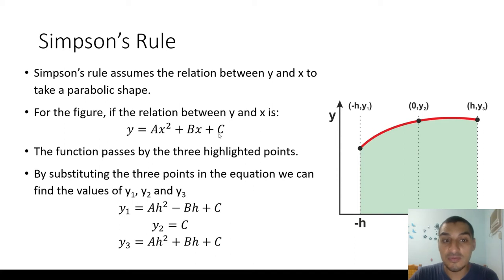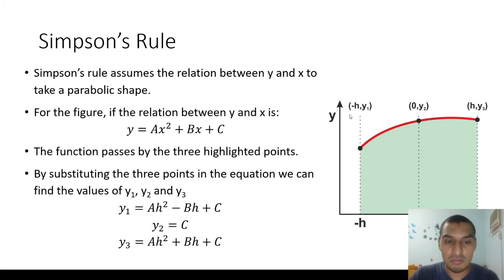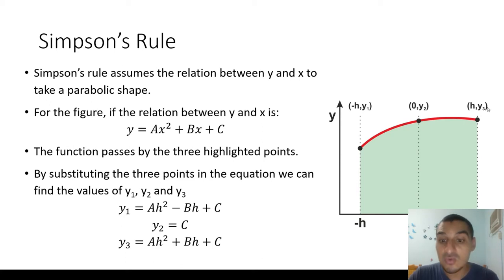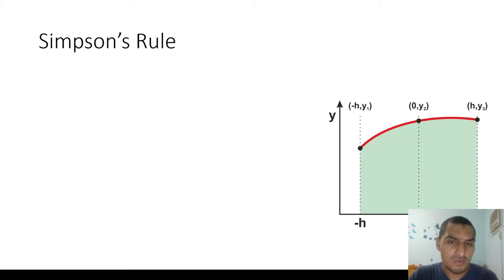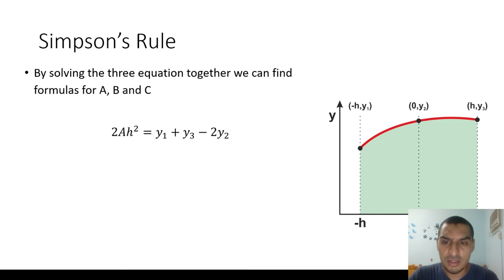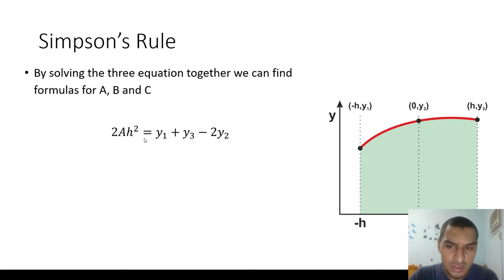The next step is to express a, b, and c as functions of the known parameters. All we know are the tabulated data: h and y values — we know x and y for each point, meaning y1, y2, y3, and h. But we don't know a, b, and c. By solving the three equations together, we get: 2ah² equals a specific expression — keep this in mind as we will return to it.